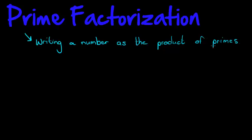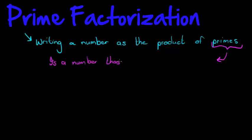So what is a prime number? A prime number is a number that has only one and itself as a factor.